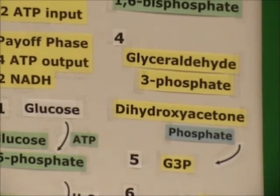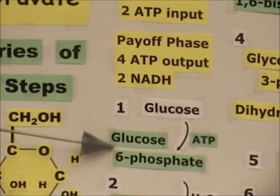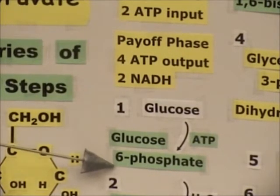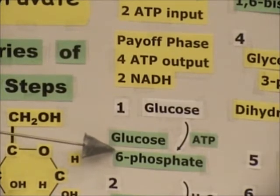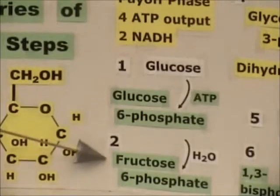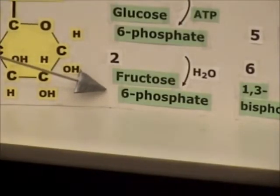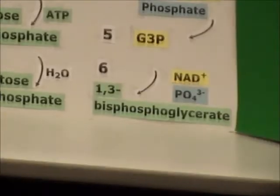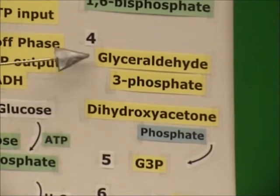If we go back to step 1, instead of calling it glucose 6-phosphate we call it G6P. Step 2, we call it F6P — so much easier. Back over to step 4, which is going to be a cleavage to form two different molecules. Cleaving means cutting into two pieces.